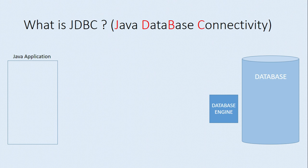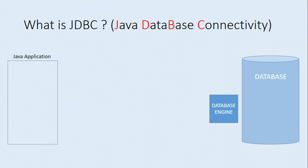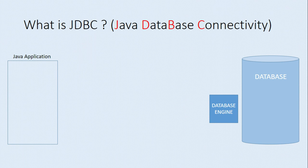Now let's try to understand how JDBC helps us interact from Java to the database. In the previous video we saw that the database engine receives the SQL query and it passes through four different phases: query tokenization, query parsing, query optimization, and query execution. This task is done on the database side.